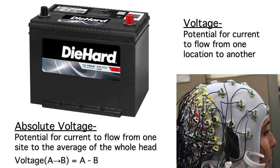It turns out that the voltage between two electrodes is equal to the difference between their absolute voltages. For example, the voltage between electrode A and electrode B is just the absolute voltage at electrode A minus the absolute voltage at electrode B.